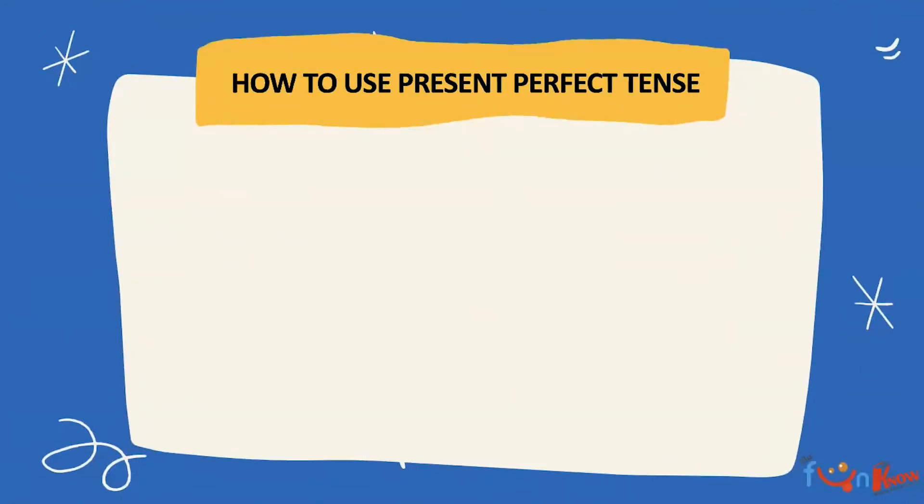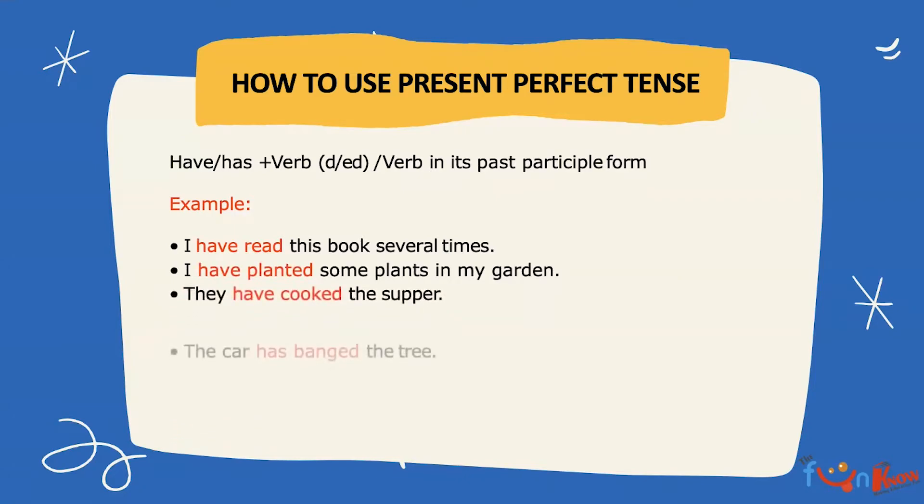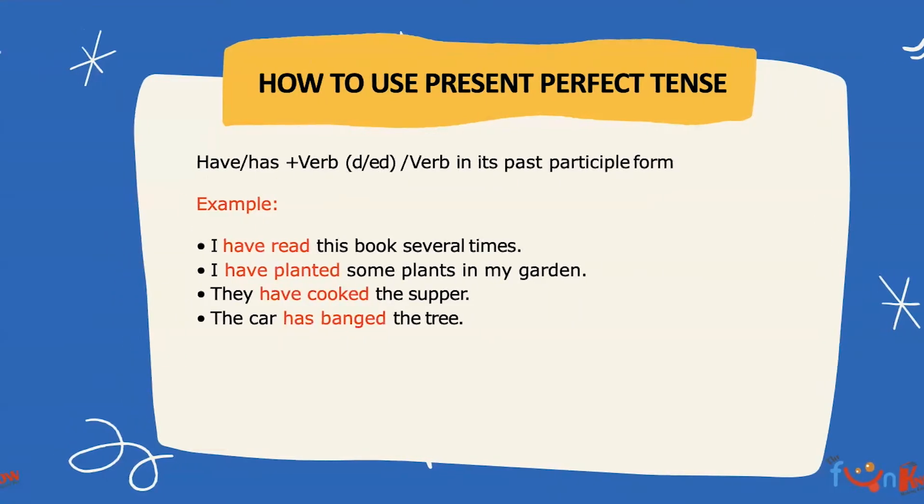Let's see how we can use present perfect tense and how to construct it. We have have or has plus the verb with d or ed, meaning a verb in its past participle form. Some examples are: I have read this book several times. I have planted some plants in my garden. They have cooked the supper. The car has banged the tree.